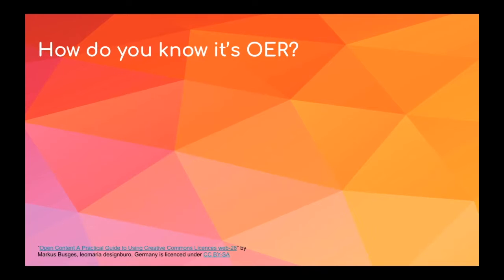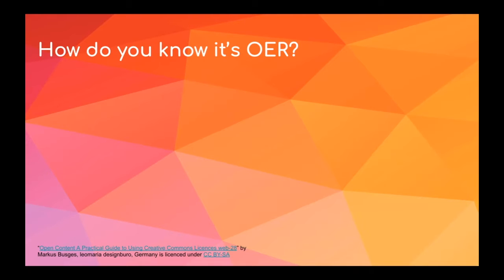How can you tell if something is an open educational resource? The key is to check the license or the terms of use. Quite often you'll see a Creative Commons license on an OER. That's the easiest way for a creator to put something out to be used as an OER.